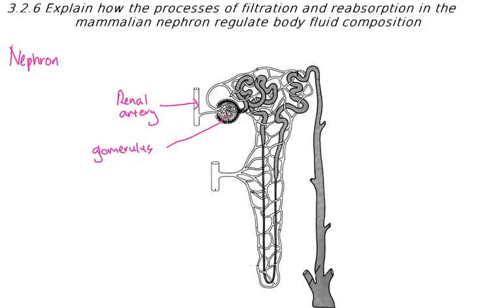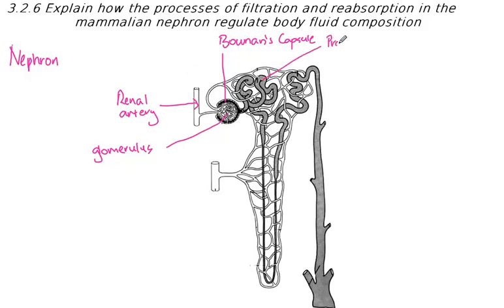Surrounding the glomerulus is this structure called the Bowman's capsule. The Bowman's capsule leads into this network of tubules, and the first part of it is called the proximal convoluted tubule.